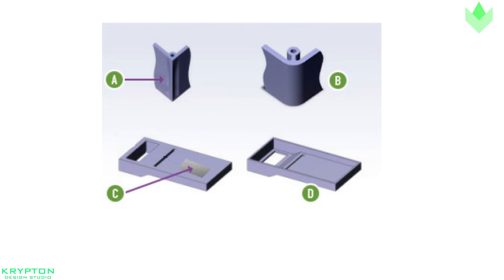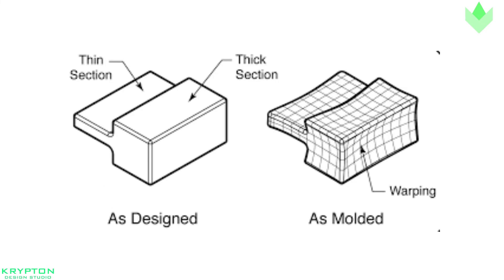This causes warping, twisting, and cracking to occur where two sections meet. To avoid this problem, try to design with completely uniform wall throughout the part.